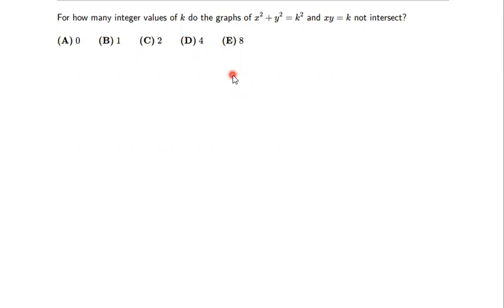So we have two equations: x squared plus y squared equals k squared, and xy equals k. We want to find how many integer values of k make these graphs not intersect.